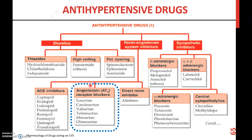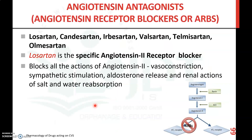The next class of drugs acting on the renin-angiotensin system is angiotensin receptor blocking agents, including losartan, candesartan, irbesartan, valsartan, telmisartan, and olmesartan. All these drugs end with 'sartan,' making them easy to remember. These are also known as angiotensin antagonists or ARBs.